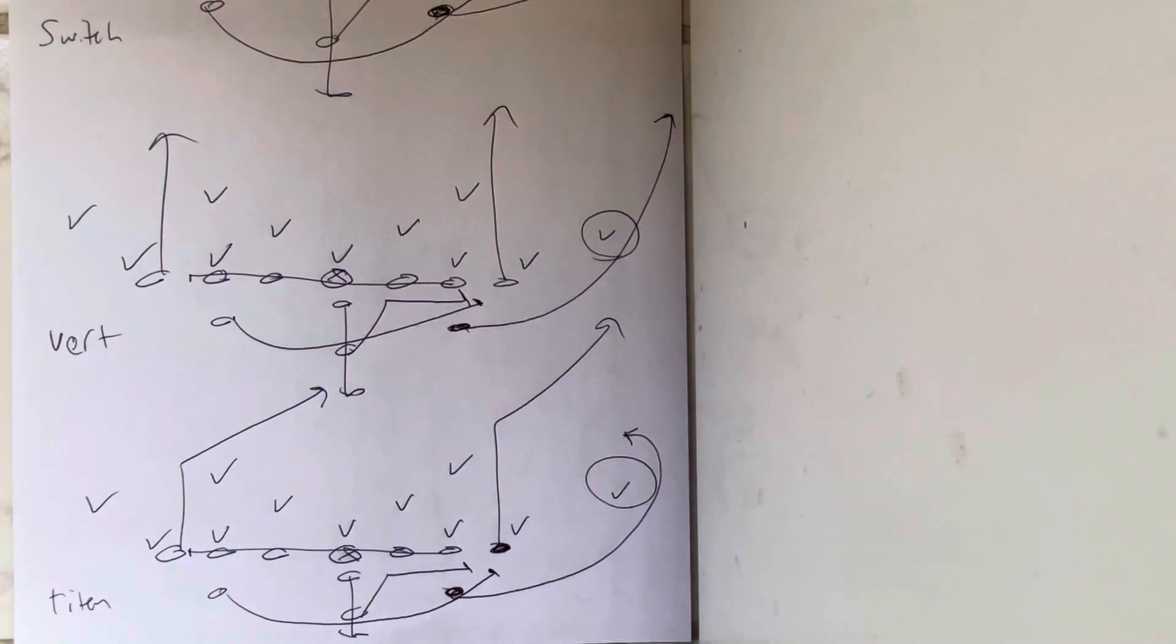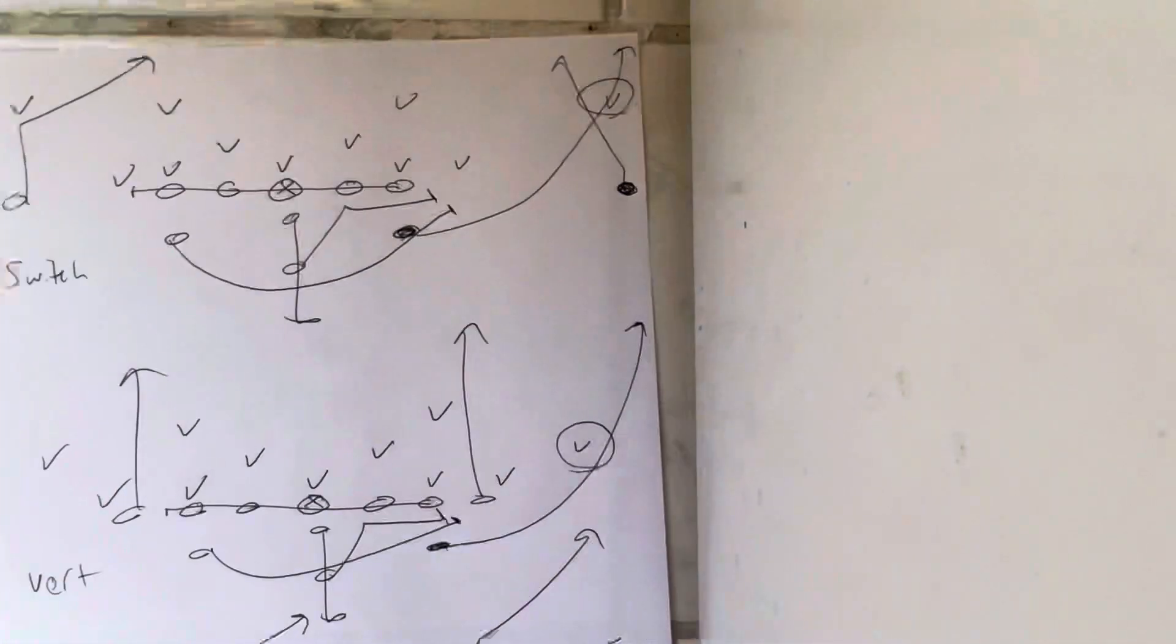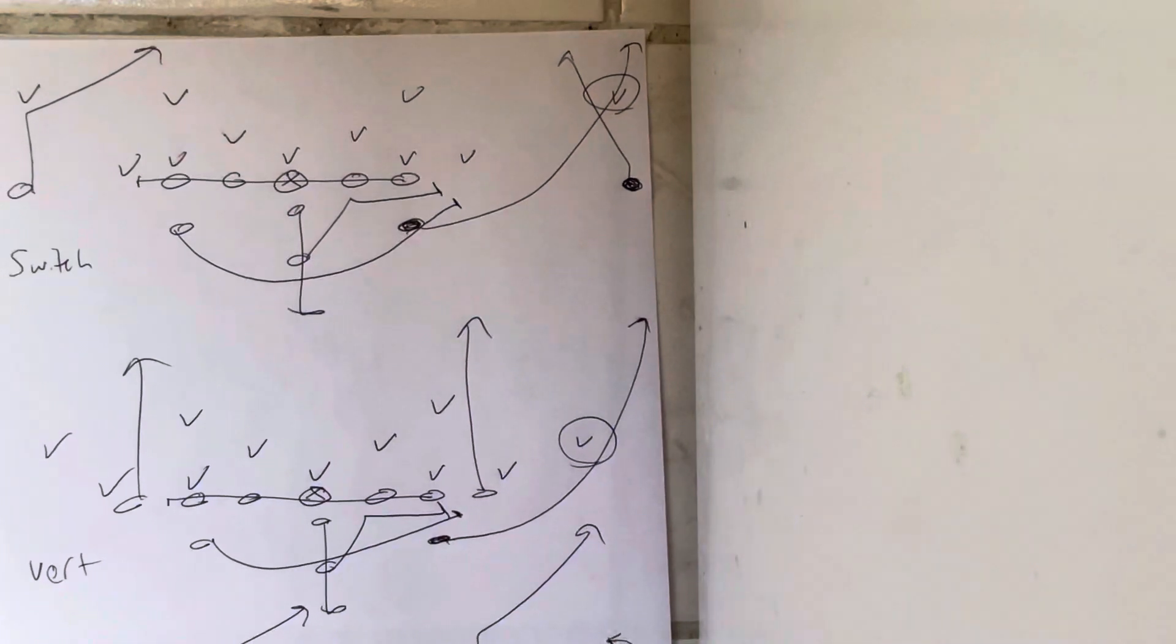The thing that we learned from this is Paul Johnson always did this and his disciples are doing it: they bind the corner. So if there's a play-side safety, you don't attack the play-side safety—you attack the corner. You bind him and make him pay for having to play this waterfall pod.